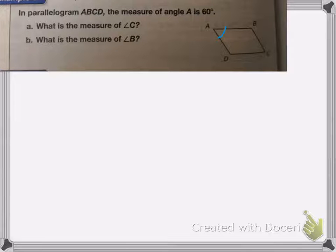Now it wants me to find angle B and angle C. Well, I know that angles that are opposite of each other have to be the same. So that means angle C has to be the same as angle A. So angle C is equal to 60 degrees.